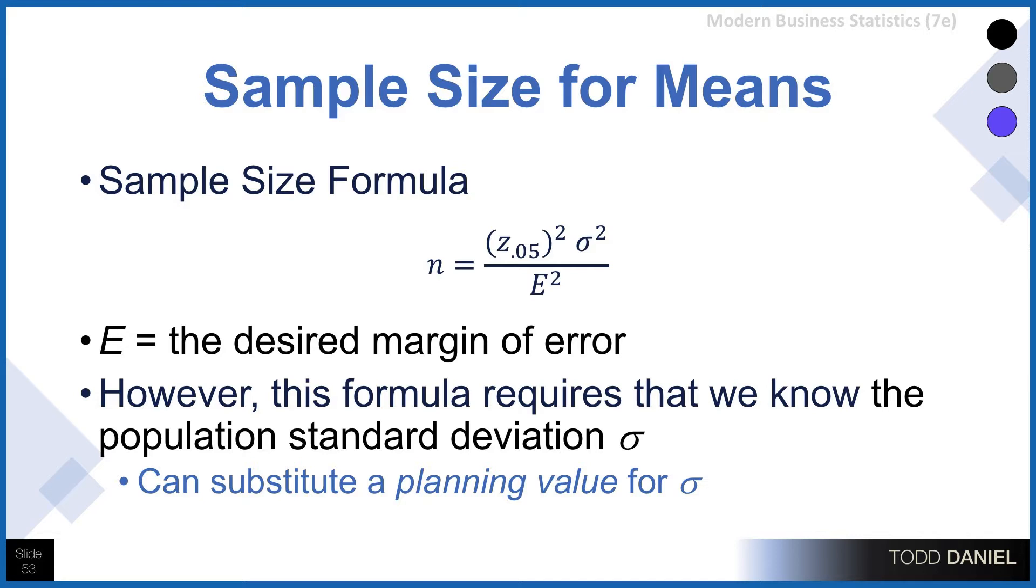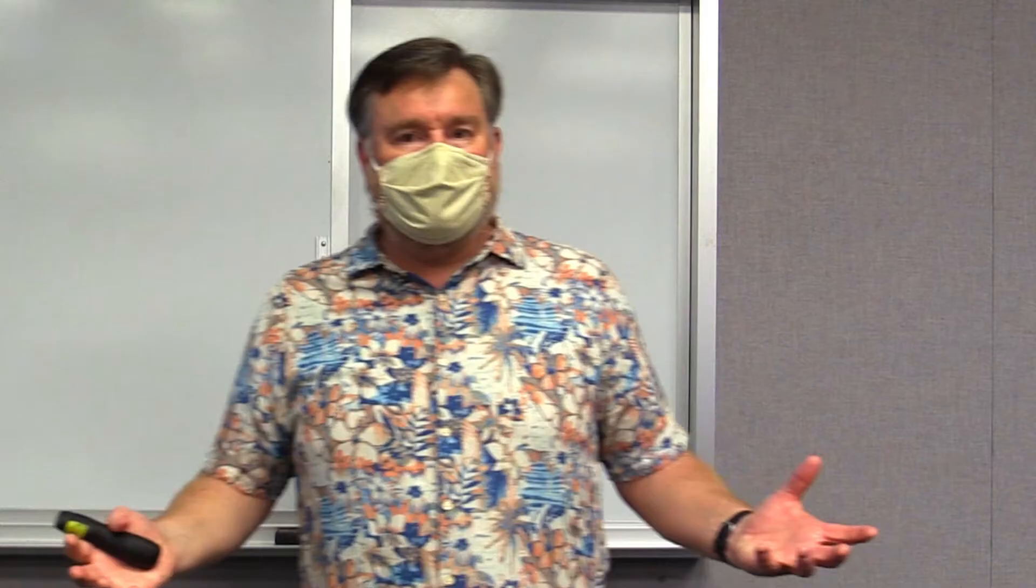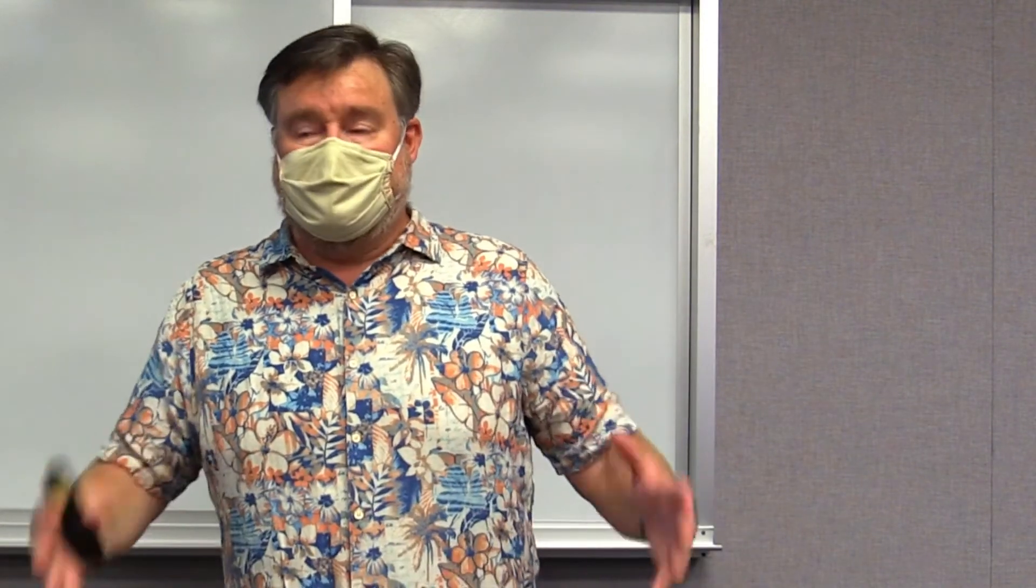And the second thing I want to point out is that this formula assumes that we know the population standard deviation or sigma. But as we've already discussed, it's very common that we do not know the population standard deviation, and in those cases we can use a planning value.